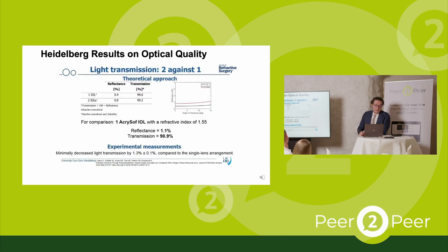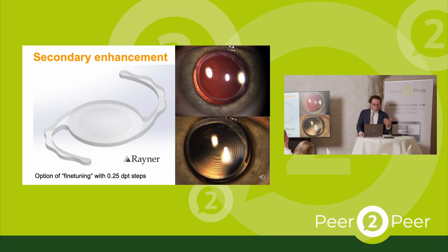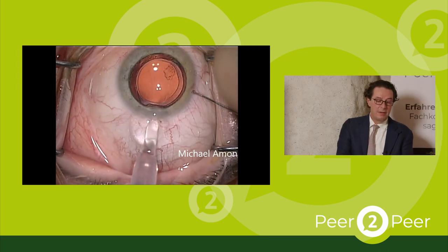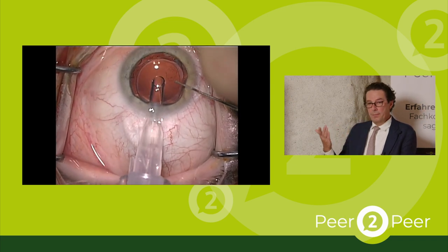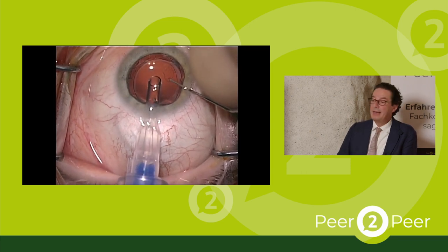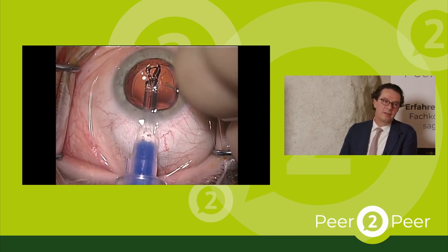We can also use this for secondary enhancement. If you have a monofocal pseudophakic patient, you may implant a lens on top afterwards. Even if the patient has already had a YAG capsulotomy, it can still be done, though I prefer to implant the lens first and do the YAG laser later if necessary.